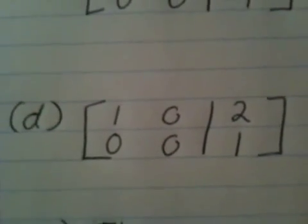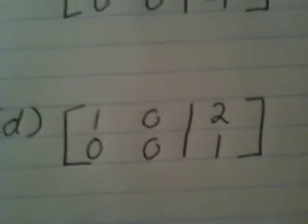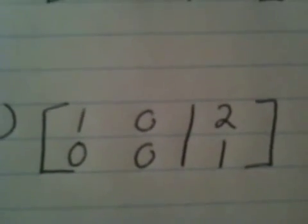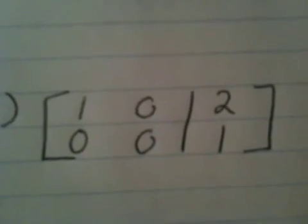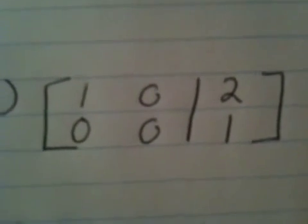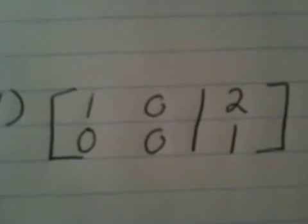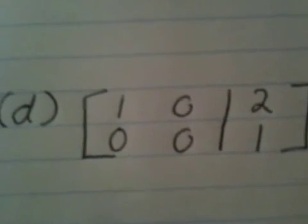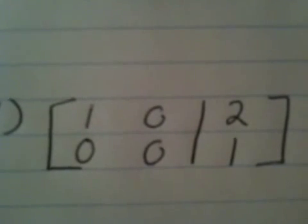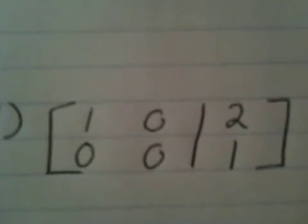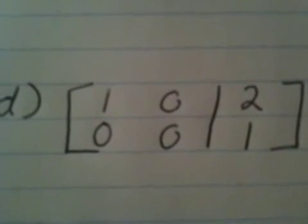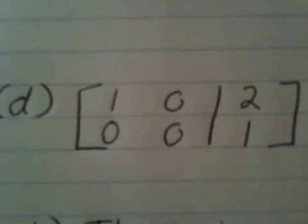In our final matrix, D, we have 1, 0, 2 in the top row and 0, 0, 1 in the bottom row. The first non-zero number in the top row is 1, and the first non-zero number in the bottom row is also 1. The leading 1 in the top row has nothing above it, nothing to the left, and a zero below it. The second non-zero 1 is in the second half of the matrix — the augmented part, not the coefficient part — so it doesn't count. Therefore, this matrix is in reduced row-echelon form.